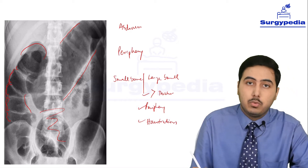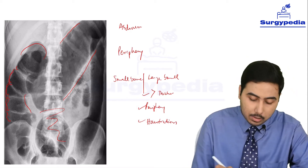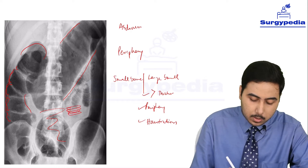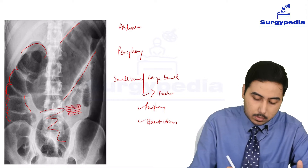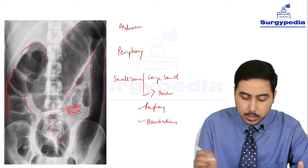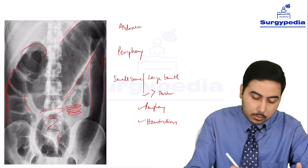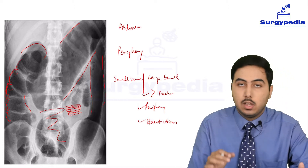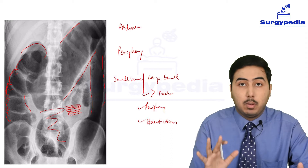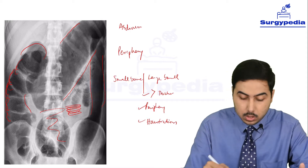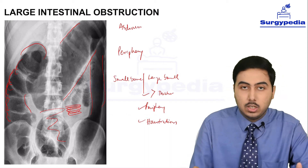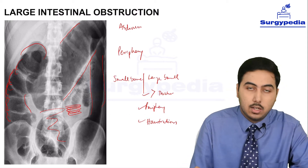In small bowel obstruction, we would have got valvulae conniventes. But here we are getting nothing of that sort. This part is completely plain, but we are getting haustra markings. And this is classical large bowel obstruction. So this is an image showing large intestinal obstruction.